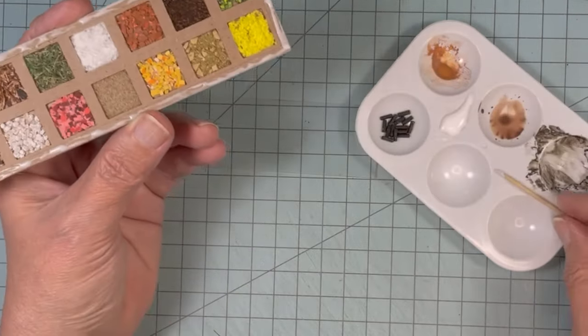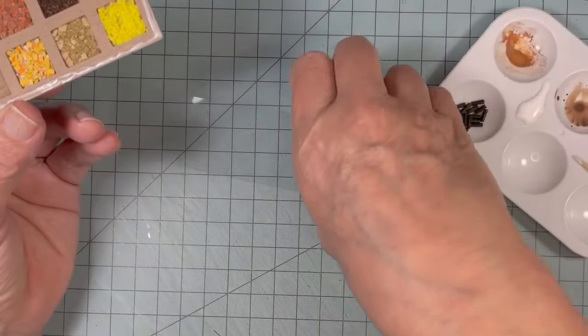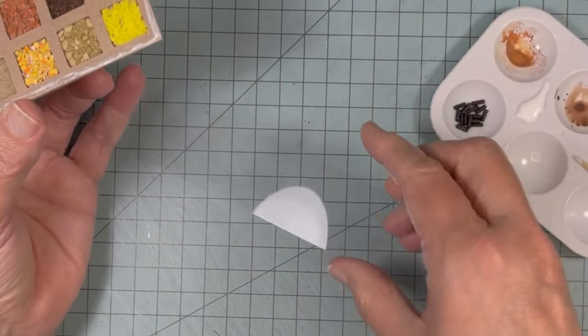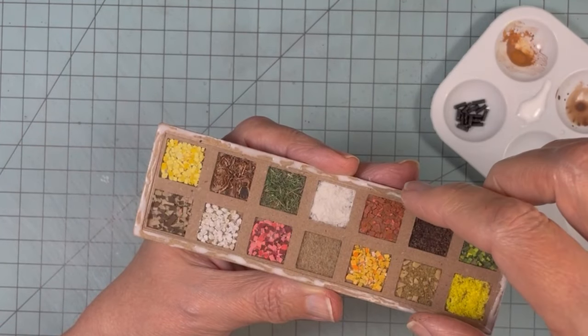I'm applying glue all the way around the edge on the back back and then I'm going to lay the packaging on carefully not to get glue on it. And then I will glue the front front onto the back front.